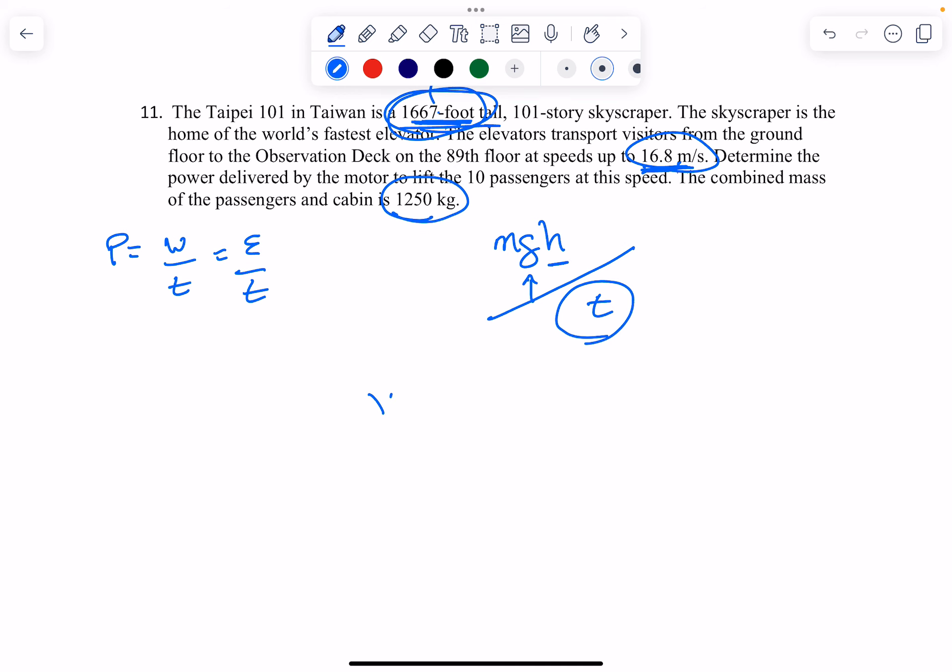So you're going to do, it's upward, so you can say y2 equals y1 plus v1t plus 1 half at squared. But since it's moving at 16.8, it's not accelerating, so that term, the a, is 0.